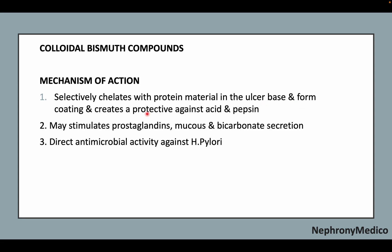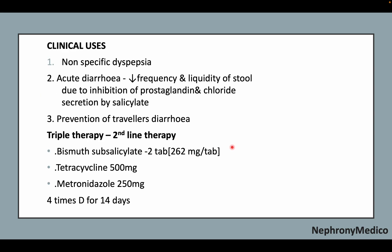The mechanism of action includes selective chelation with protein material in the ulcer base, forming a coating that creates protection against acid and pepsin. It may also stimulate prostaglandins, mucus, and bicarbonate secretion, and direct antimicrobial activity against H. pylori may be seen.